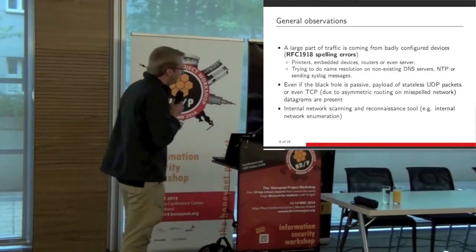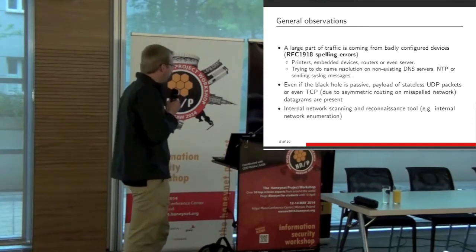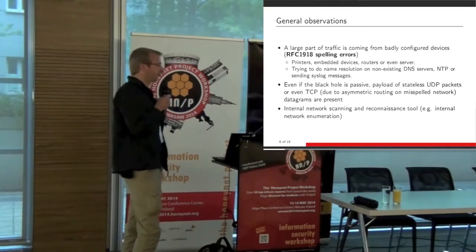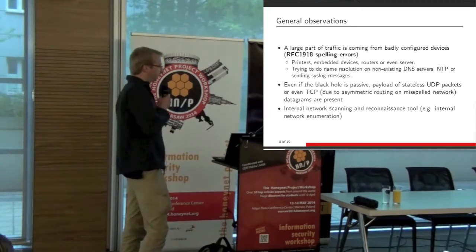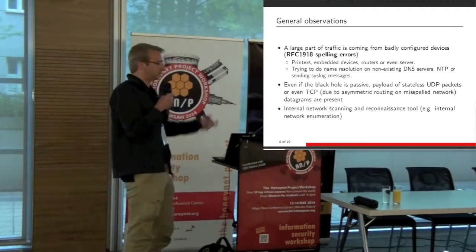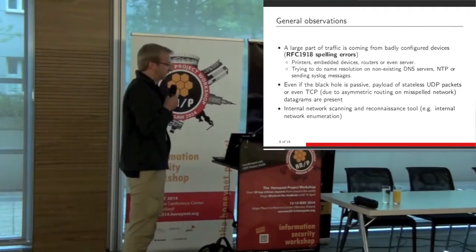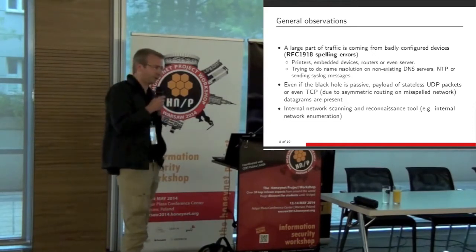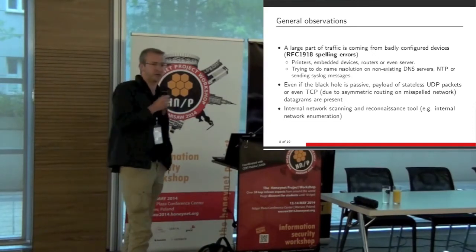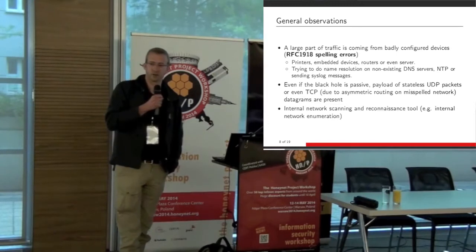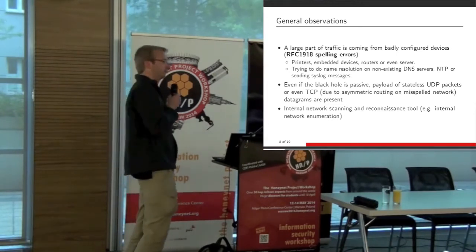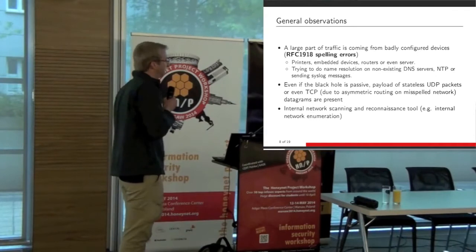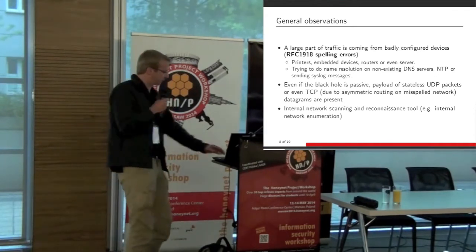Some of the things we've discovered: for example, people running HP OpenView and misconfiguring some IP addresses for the reconnaissance tool — we get back some data. The thing that's quite interesting is that you can enumerate internal networks without even touching those networks. You can see what a company has directly just by looking at this data. It's quite interesting.